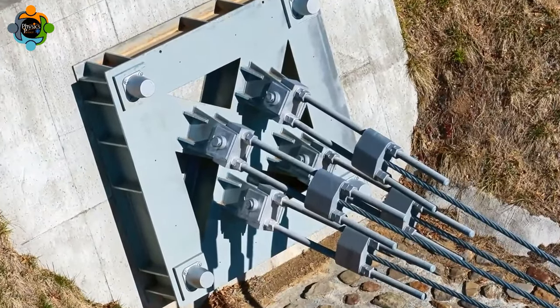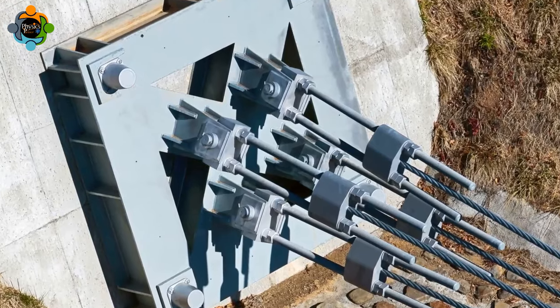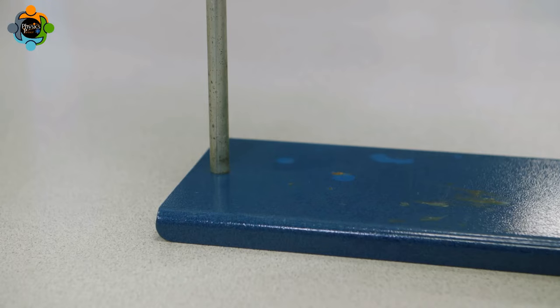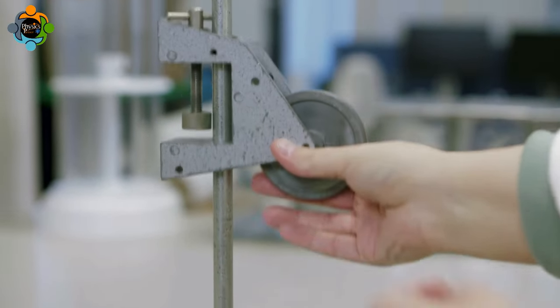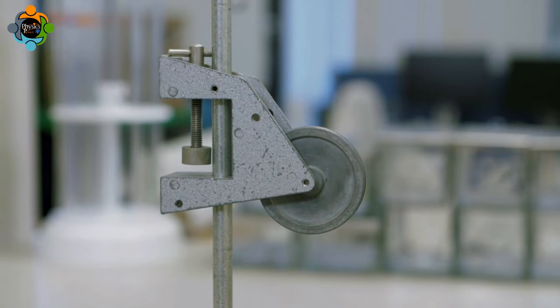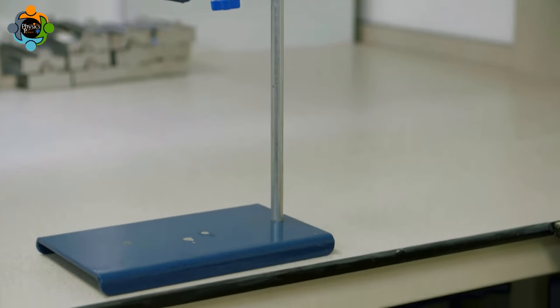The Young's modulus is a constant which allows the extension of materials of different sizes and shapes to be calculated. In this experiment, the Young's modulus of a metal wire will be measured. A bench pulley is fixed to a retort stand or attached to the edge of a desk.